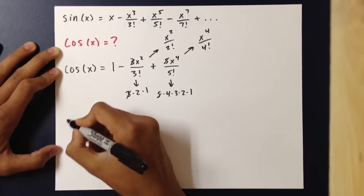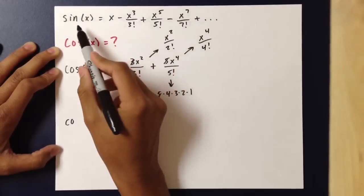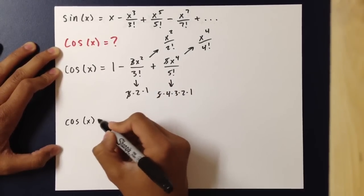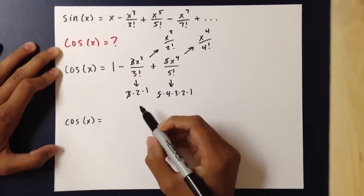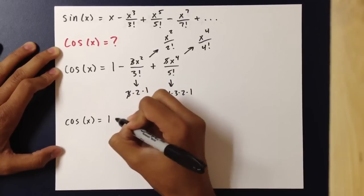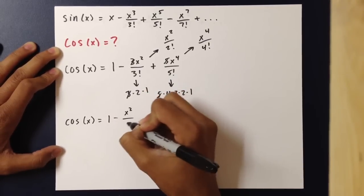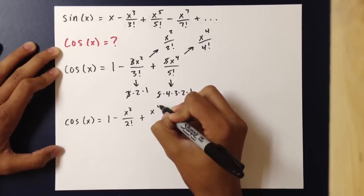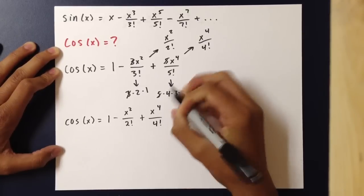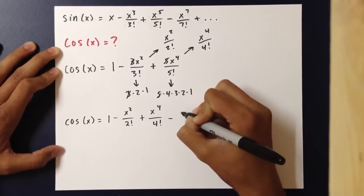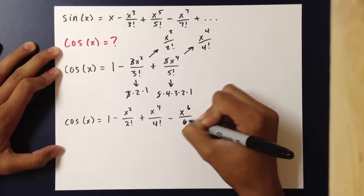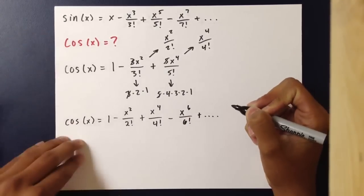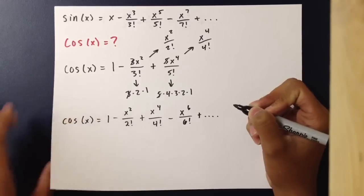From the derivative of the Taylor polynomial of sine of x, we find that the Taylor polynomial of cosine of x is 1 minus x squared over 2 factorial, plus x to the fourth over 4 factorial, minus x to the sixth over 6 factorial, and so on. That is the Taylor polynomial.